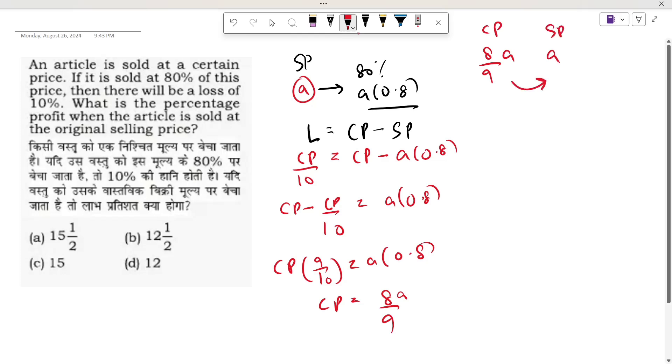So how much profit is happening? A minus 8 upon 9, which is 1 upon 9. The profit percentage is this divided by cost price 8 upon 9, into 100. 9 cancels, giving 1 upon 8 into 100, which is 12.5.